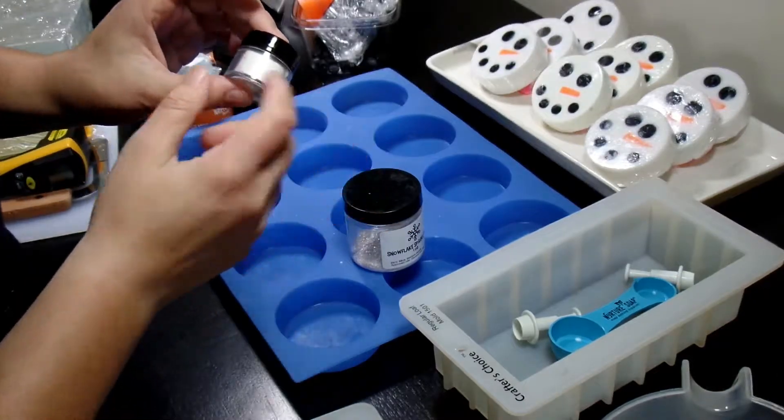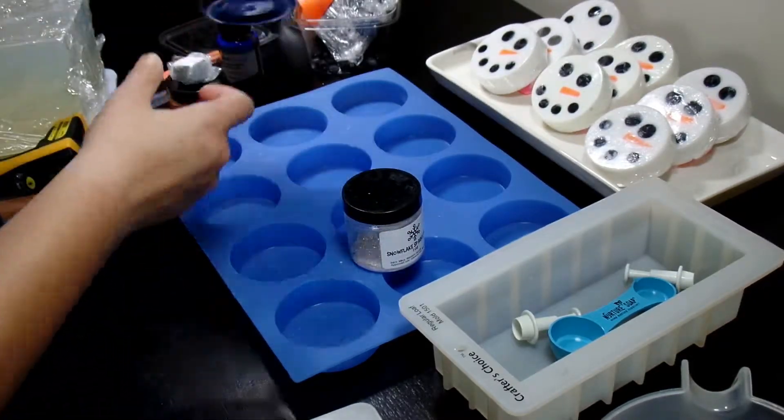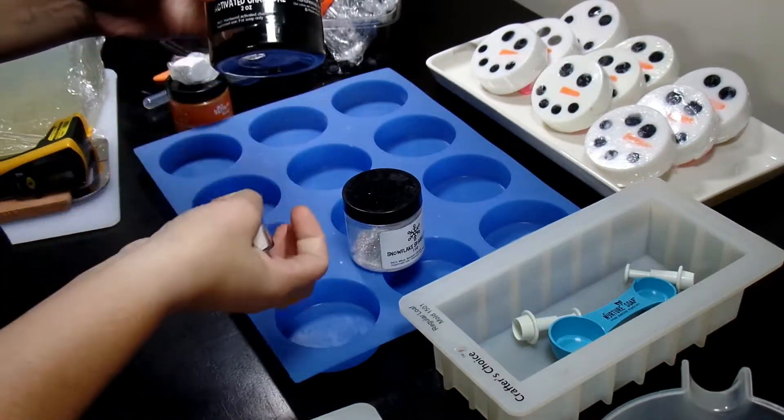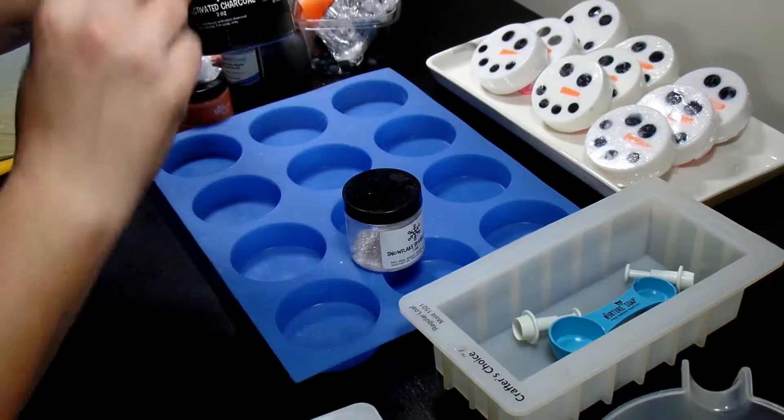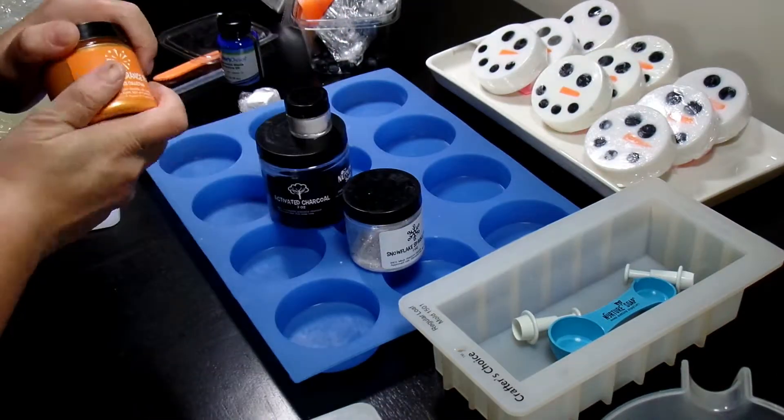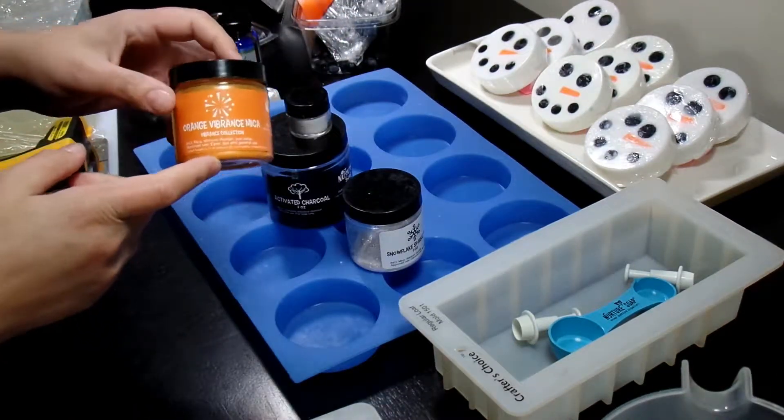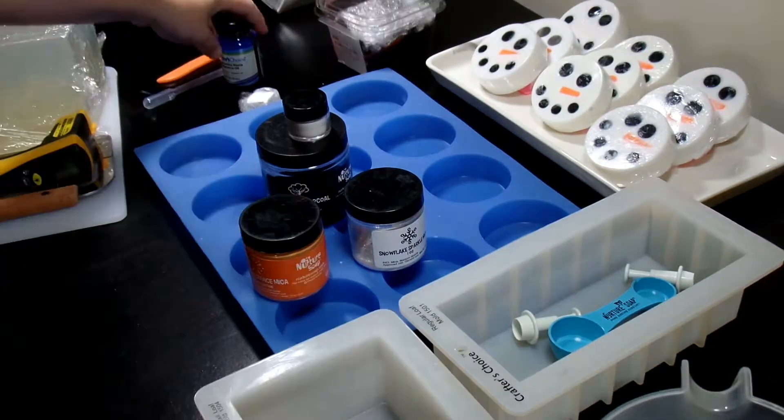I have some Micro Pearl mica. I added just a touch of this to the my black charcoal activated charcoal in my clear base when I was making that for the eyes and the mouth.